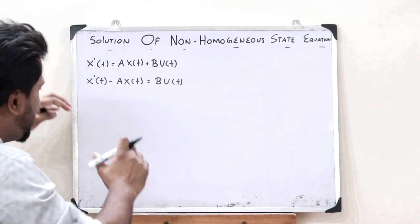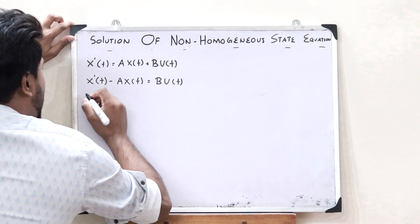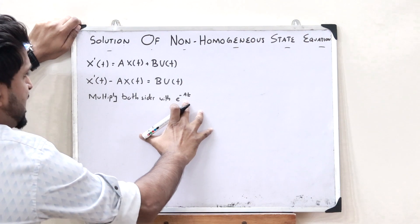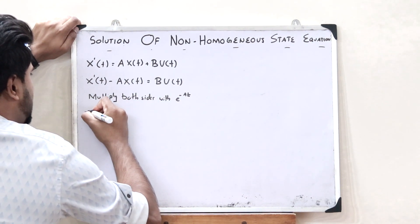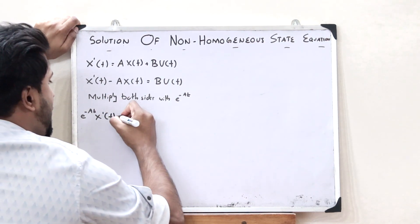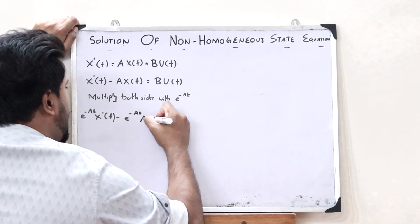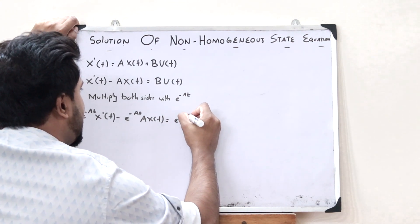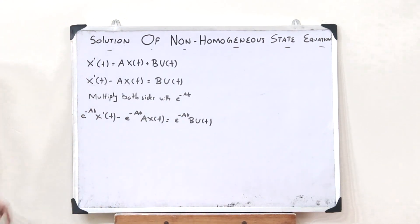Next, let us simply multiply both sides by e raised to minus At. Upon multiplying e raised to minus At on both sides, we get: e^(-At)·x'(t) - e^(-At)·A·x(t) = e^(-At)·B·u(t).